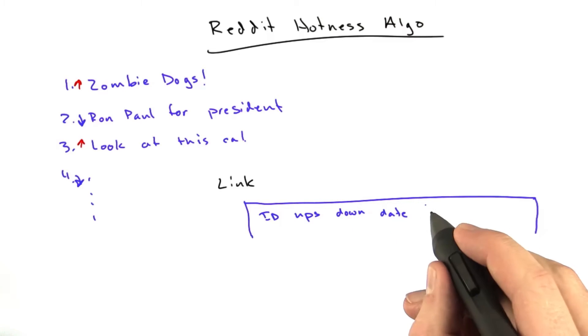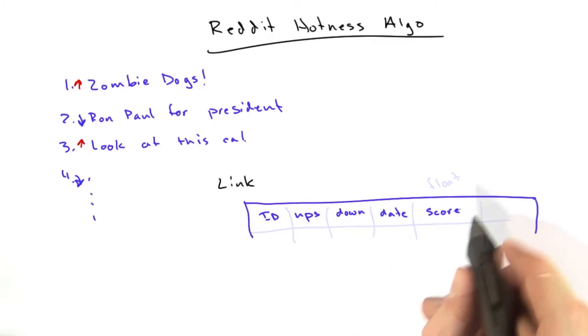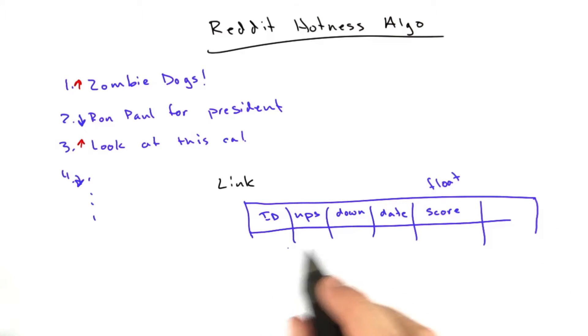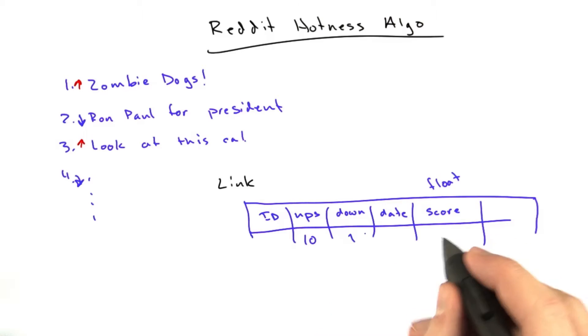And it also has this field called score. It's a floating point field, and this is the total score of the link. So you may have 10 ups, 1 down, and the score might be actually 25.